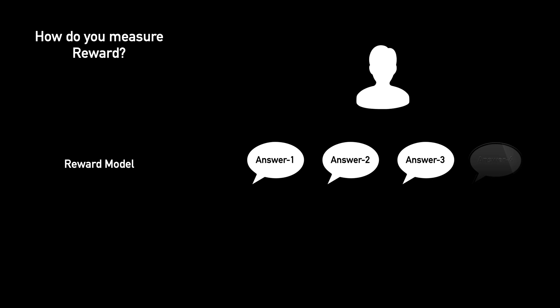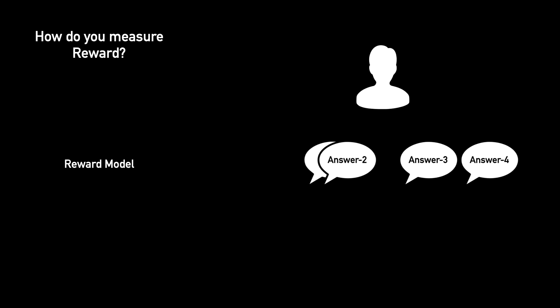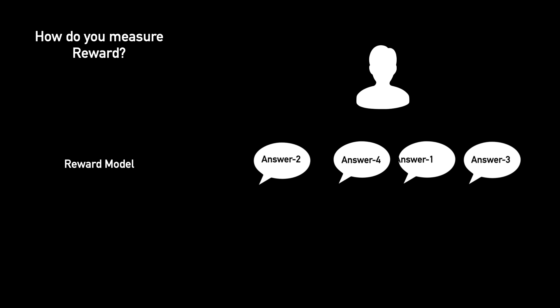So to construct a reward model for a conversation, OpenAI turns to its human labelers again. But this time to rank multiple responses from best to worst based on a variety of factors such as structure, coherence, and more. Again, not a lot of information about this step is open-sourced, so we don't really know how many answers were ranked by how many labelers during this step.